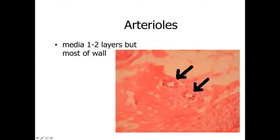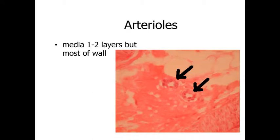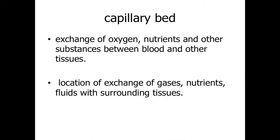Moving down to arterioles, these are very small blood vessels still on the arterial side, important for distributing blood to capillary beds. The majority of the wall is tunica media — only one or two layers of smooth muscle cells. It is these arterioles that constrict down and regulate blood flow into the capillaries, decreasing pressure and flow so we don't blow out the capillaries with high-pressure blood passing through those very thin-walled structures.